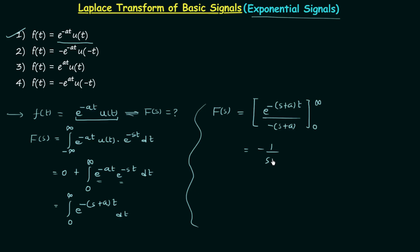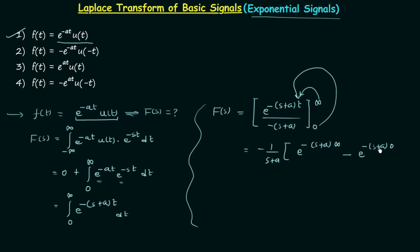We can write it as minus 1 over (s+a). Since (s+a) has no term of time t, we substitute the limits: put infinity in place of t and then 0 in place of t. So we have e^(-(s+a)·∞) minus e^(-(s+a)·0). Now we will focus on the exponential e^(-(s+a)·∞). We know s is a complex variable equal to σ + jω, so we can write e^(-(σ+jω+a)·∞).